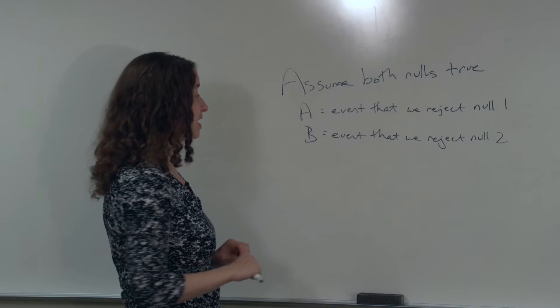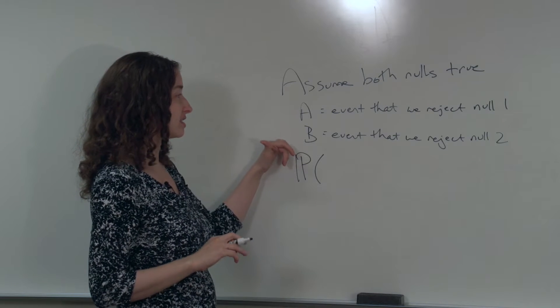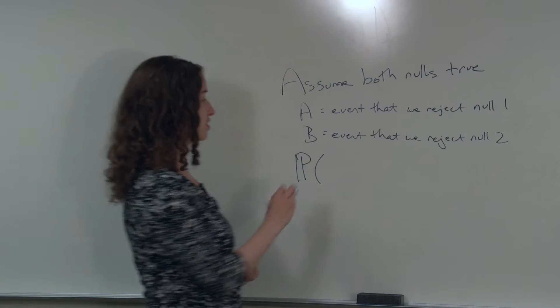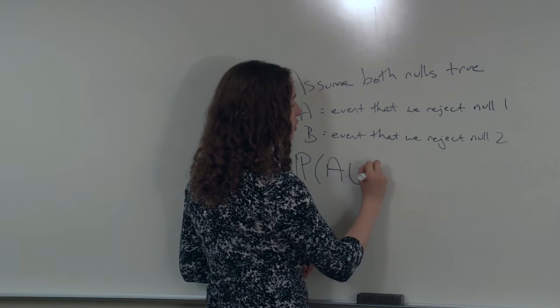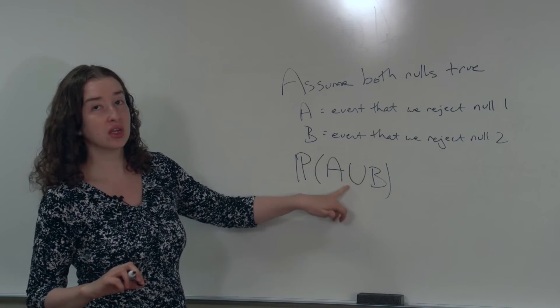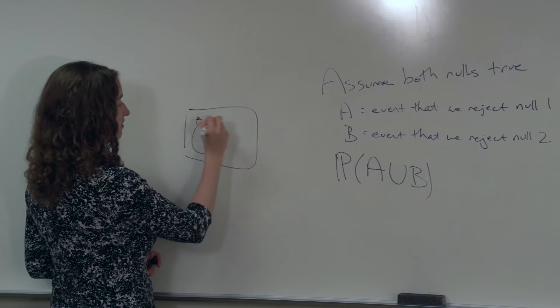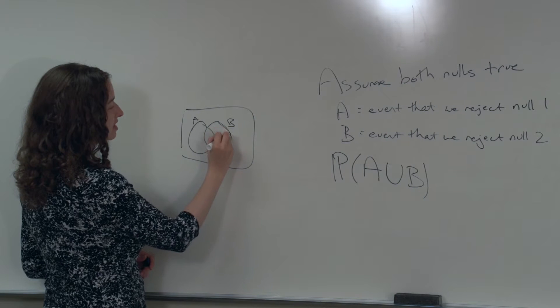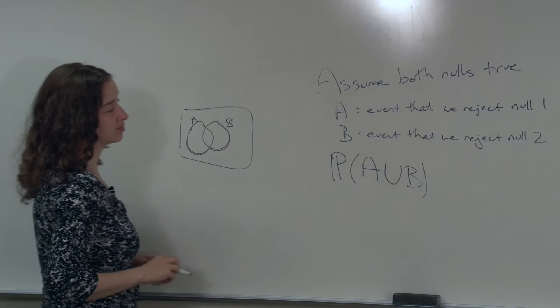What we're interested in is the probability that if we conduct both of these tests, at least one of the two nulls will be rejected. In other words, we're interested in the probability that either A happens or B happens. If you haven't seen this notation before, this U stands for union and it means or. The way to think about it is that if we have an event A and an event B, if either one happens, we're talking about the union of those two circles. U for union, A or B.